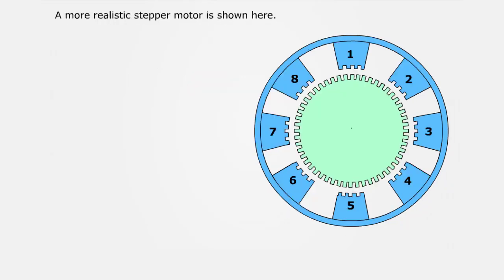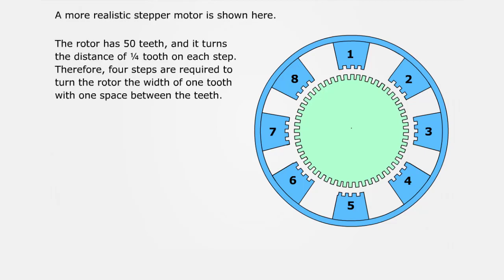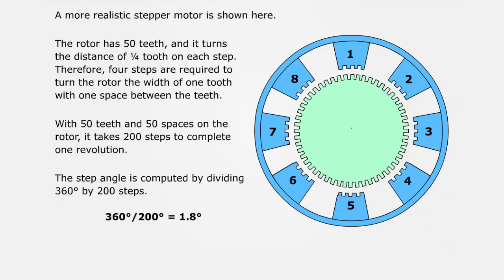A more realistic stepper motor is shown here. The rotor has 50 teeth and it turns the distance of one quarter tooth on each step. Therefore, 4 steps are required to turn the rotor the width of 1 tooth with 1 space between the teeth. With 50 teeth and 50 spaces on the rotor, it takes 200 steps to complete 1 revolution. The step angle is computed by dividing 360 degrees by 200 steps.